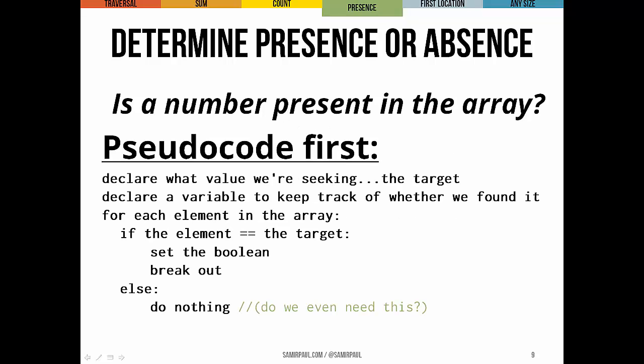Okay, here's my pseudocode. We start by declaring whatever value we're looking for, whatever the target is. We also declare a variable to keep track of whether or not we found it. Okay, so I was thinking of that as a boolean variable. For every element in the array, we check, hey, is this element the target that we're looking for? If it is, set the boolean and break out of the loop. Stop looking because we know we found it. We know that it is present.